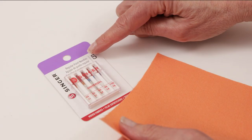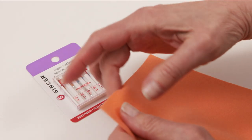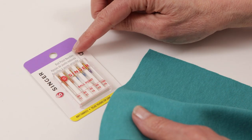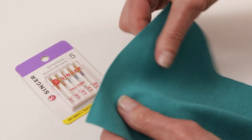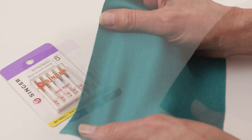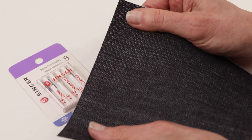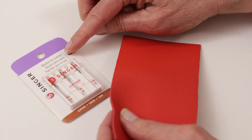Regular point needles are for non-stretch fabrics like cotton, wool, and silk. Ballpoint needles are for stretch fabrics like t-shirt, sweatshirt, and fleece. Heavy-duty needles are for heavyweight fabrics like denim and canvas. There are even leather needles used for sewing leather or vinyl.